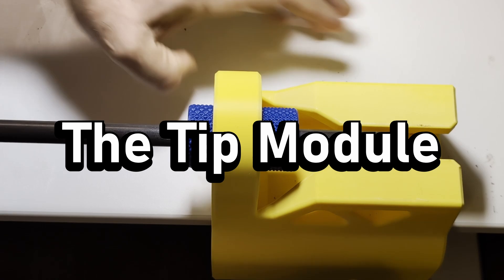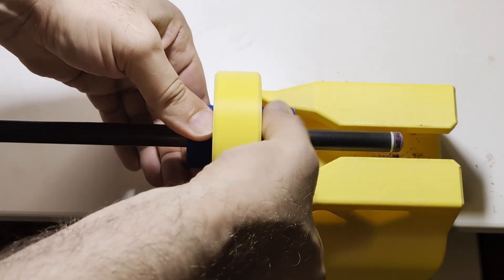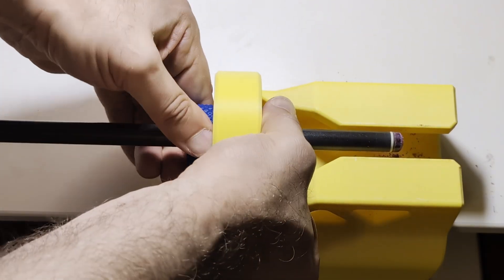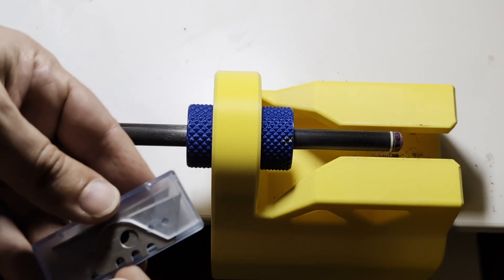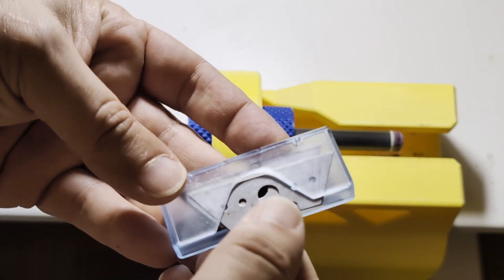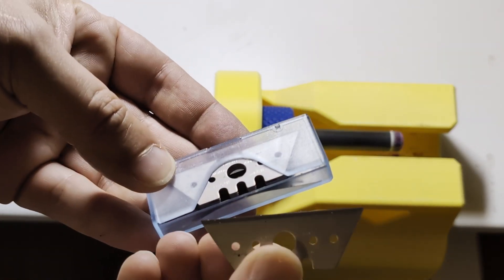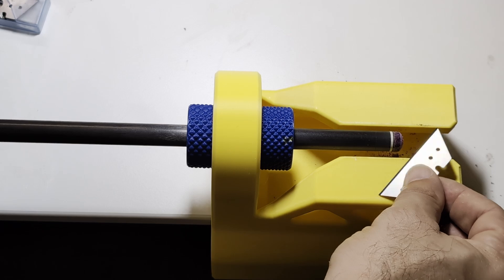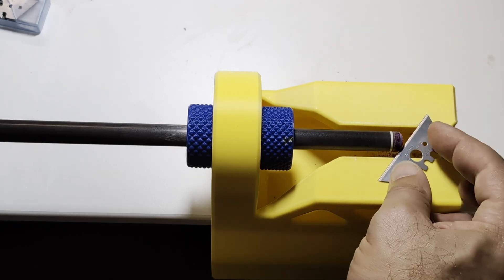This is where the magic happens. It clamps onto the end of the cue and gives me a solid platform to shape the tip. I use a sharp utility blade to trim away excess material and get the perfect dome shape.